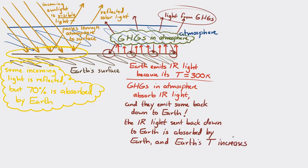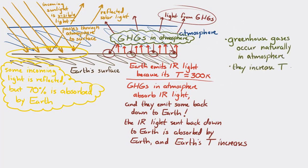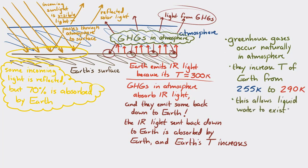Greenhouse gases are naturally occurring in the Earth's atmosphere. The existence of these natural greenhouse gases increases the temperature of the Earth from what we'd expect — about 255 Kelvin — up to 290 Kelvin. That's a good thing: it allows liquid water to exist on much of the Earth's surface and keeps conditions favorable for life as we know it.